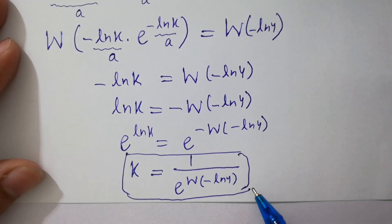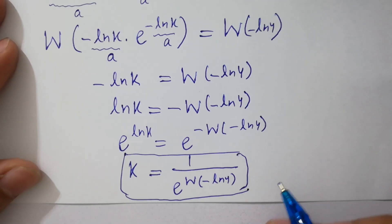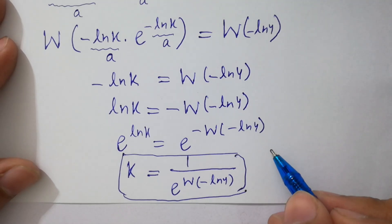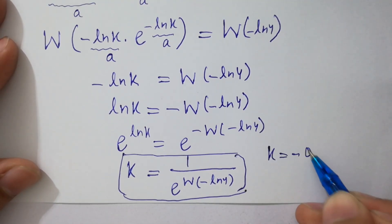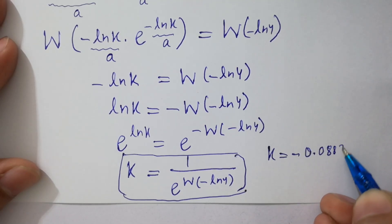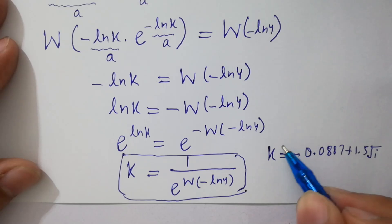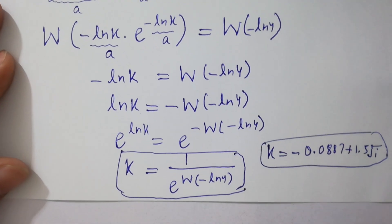This is not a real solution — this is a complex solution. On the internet, the value of k is approximately minus 0.0887 plus 1.5 root i. Thanks for watching this video.